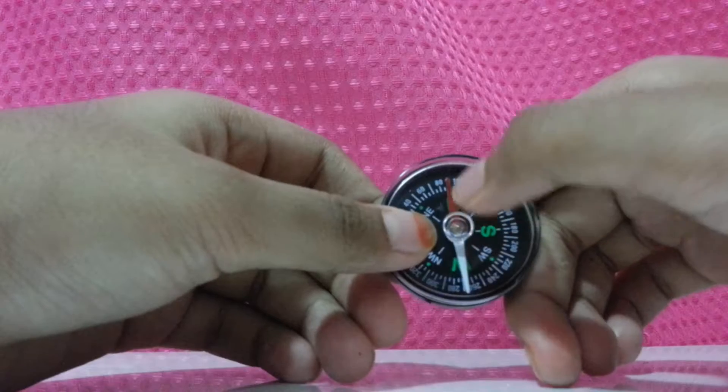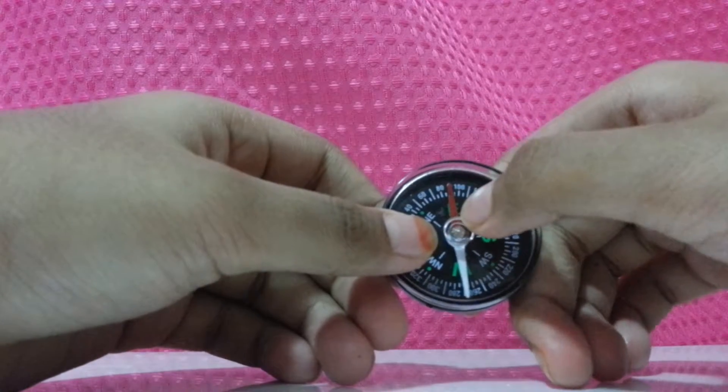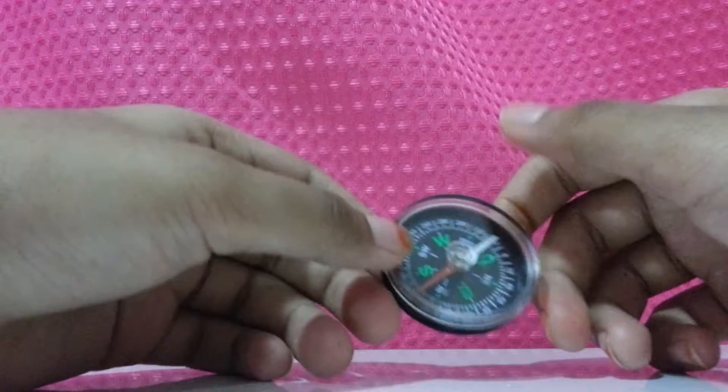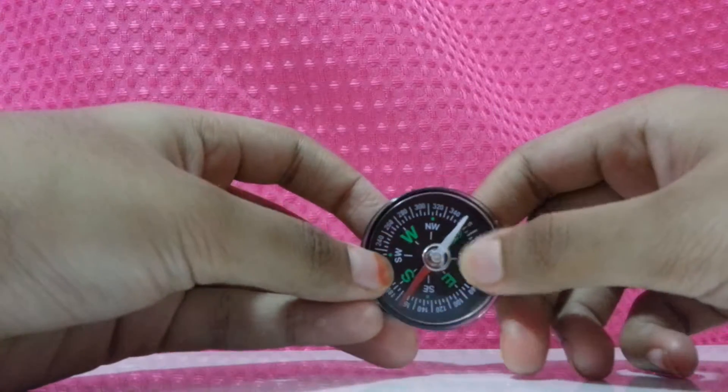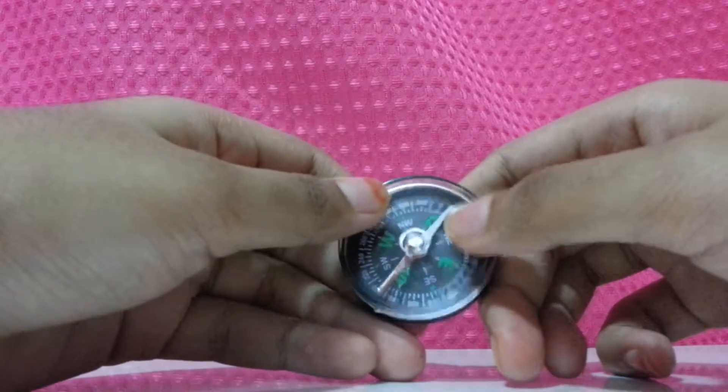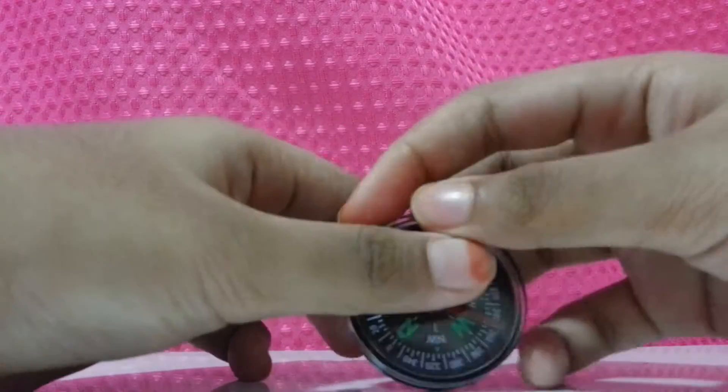So the red one is north. It always points to the geographical north of the earth. The white one always points to the south direction which is the geographical south of the earth.